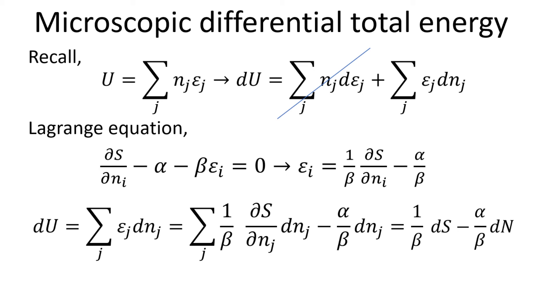We also recall our Lagrange multiplier equation, and obtain an expression for the energy level. Substituting this into the differential of U expression, we obtained a new expression for the differential U in terms of the differential of entropy S and total particles number N.